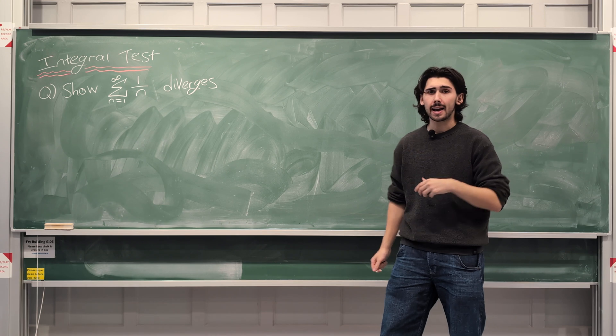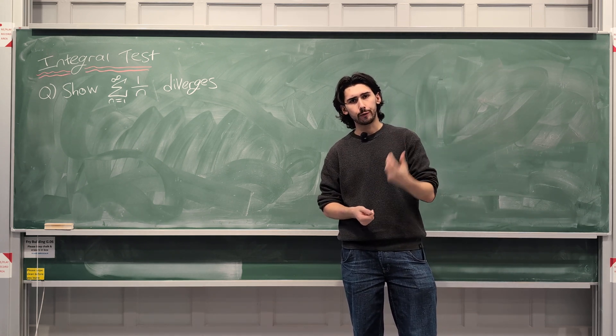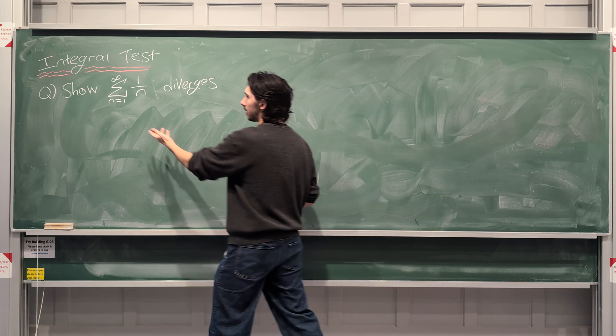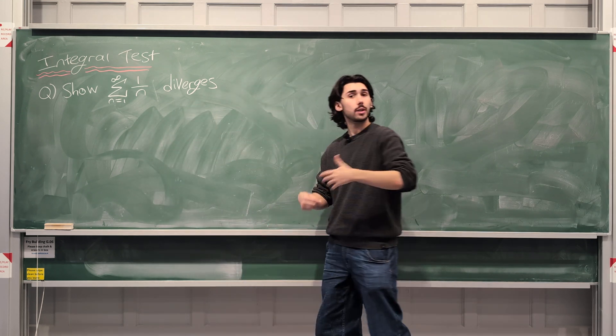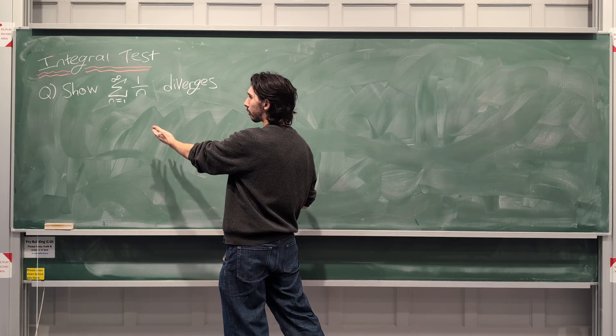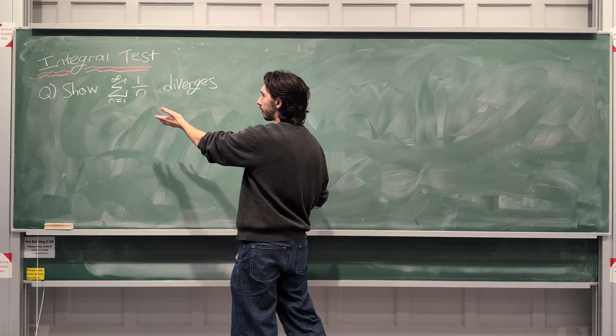In this video, we're looking at a new thing called convergence tests. So when we have a sum like the one in this question, and I'll talk about what an integral test and all that stuff is in just a moment, but when we have a sum such as this one, the sum from n equals 1 to infinity of 1 over n...